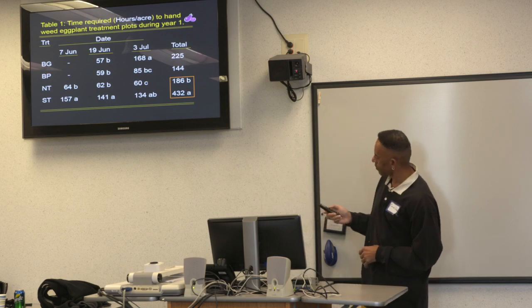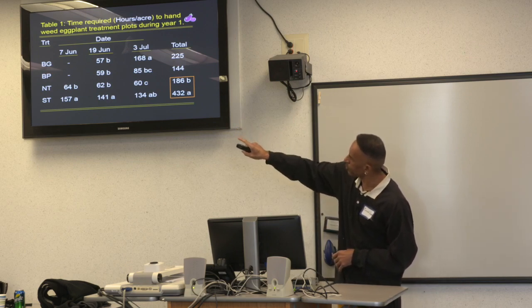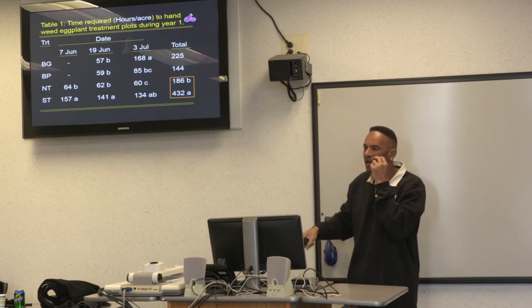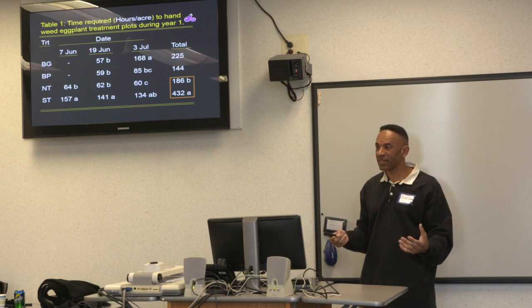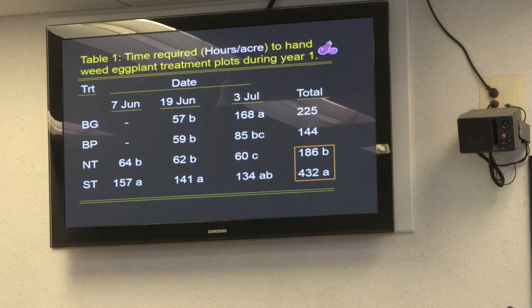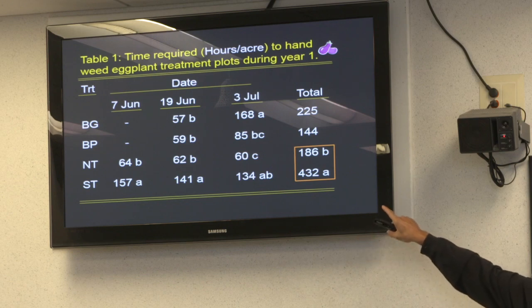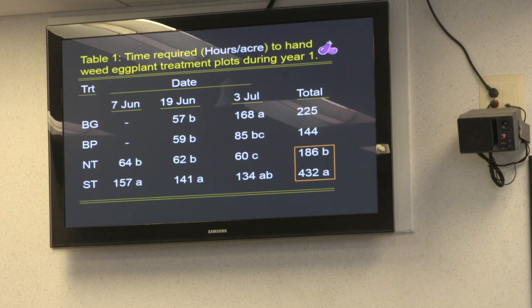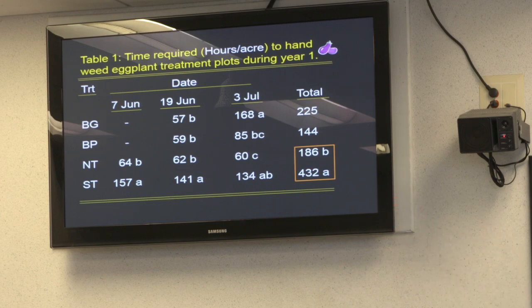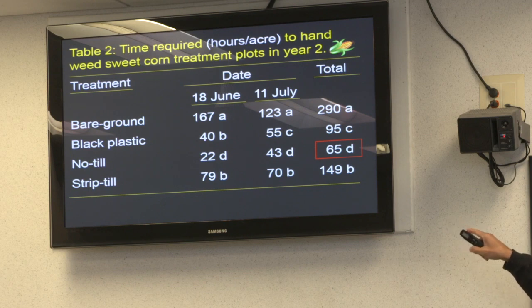We also measured how long it took to clean up plots across different weeding events. In year one with eggplant, on June 7th there was a rescue tillage event in the bare ground and black plastic plots because the crew panicked at the weed pressure and the farm manager went in and cultivated. So the fair comparison is between no-till and strip-till, with strip-till showing a lot of weeds in the row area. Interestingly, despite the rescue treatment, hours spent hand weeding in no-till were still similar to or slightly better than bare ground.